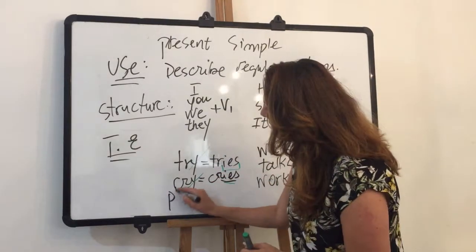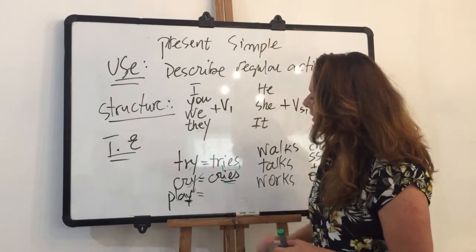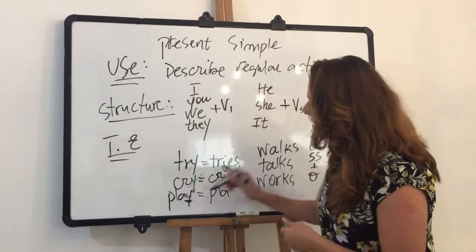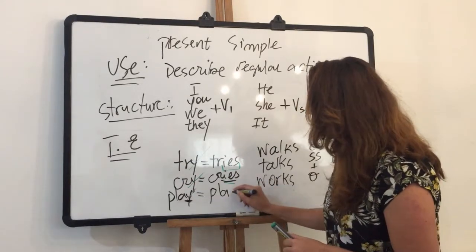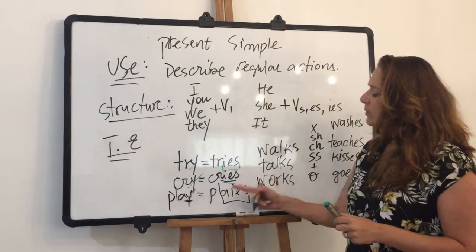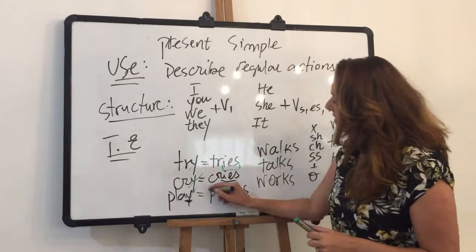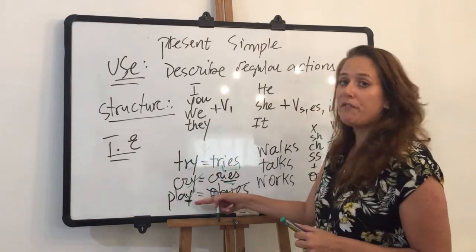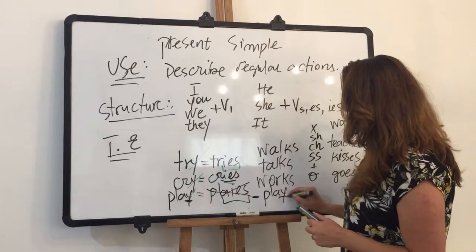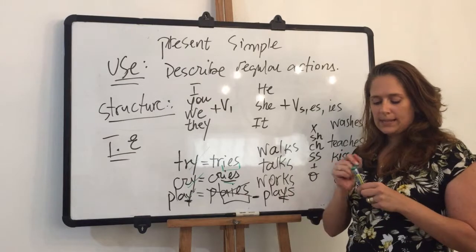Now, what happens with 'play'? It also ends with Y, so maybe I should drop the Y and add IES, like the rule says. But look what happens — I have a sequence of three vowels and I cannot have that. So in this case, because of the vowel before the Y, I have to leave it and treat it as a regular verb and just add S.